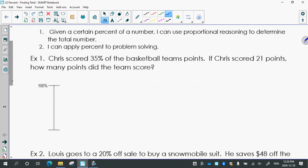This is an EQAO question. Chris scored 35% of the basketball team's points. So here's 100, 35 is less than 50, so I'm going to put 35% here. If Chris scored 21 points, so he scored 35%, he also scored 21 points, so they both go here. How many points did the team score? In other words, what's the total number of points?